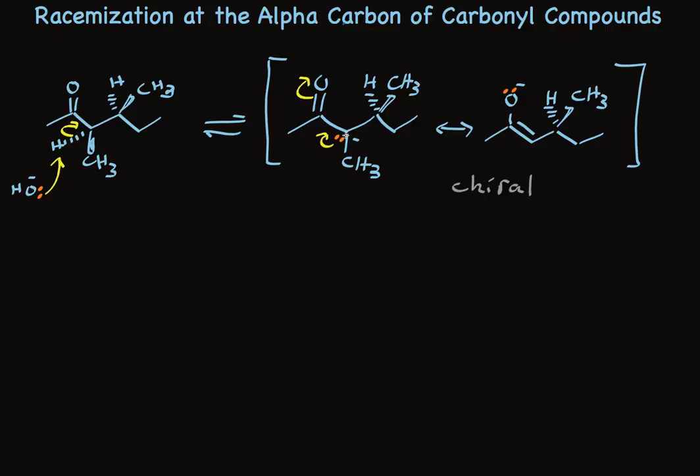And now we have an enolate that's chiral. Because although we destroyed the chirality at the alpha carbon, the chirality at the beta carbon is unaffected. And because this molecule already has chirality, approached by water to protonate the enolate will occur from one side or the other in a preferential way.